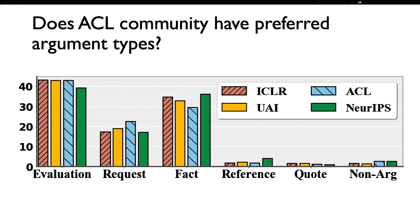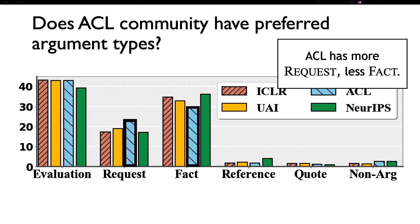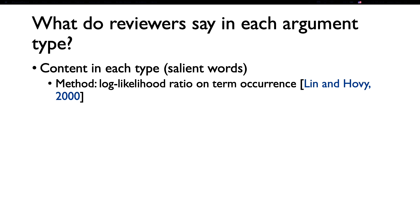Since ACL reviews are longer, we want to ask, do we prefer a certain argument type for ACL reviews? Here we show the percentage of the review composition for different venues. And we see that ACL reviews tend to ask more requests, and have less factual description compared with the machine learning conference.